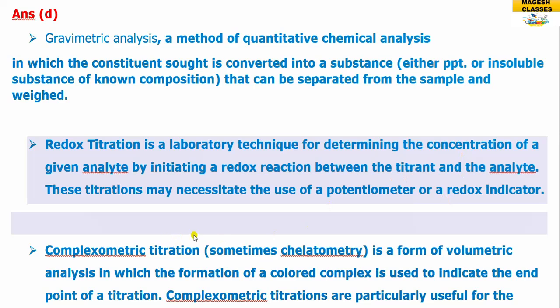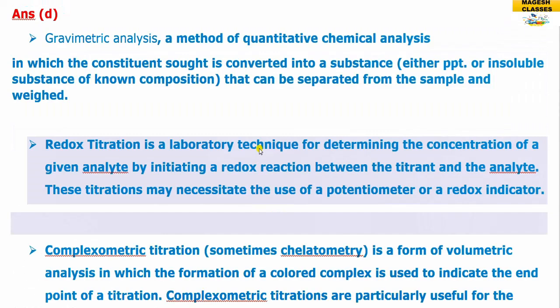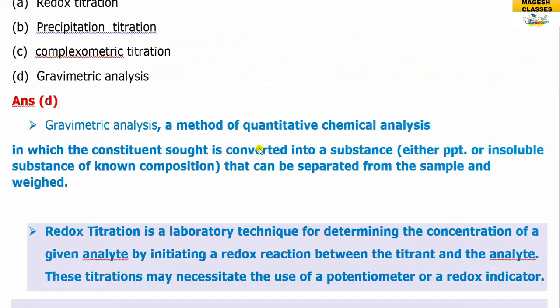Compleximetric titration — as the name suggests — is a type of volumetric analysis. At the end point, we can determine the concentration of particular metals. Compleximetric titration is used for the determination of metals.